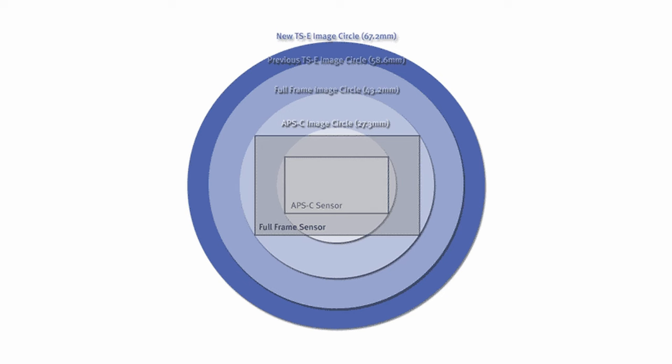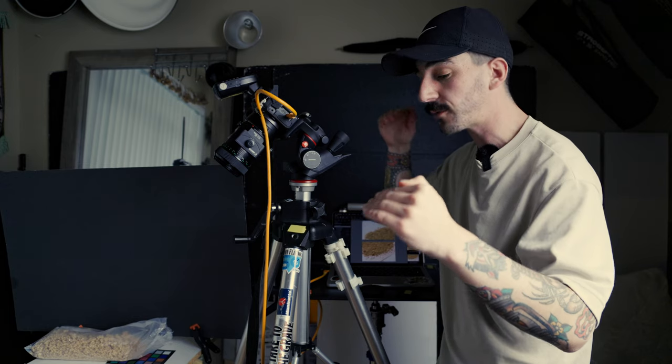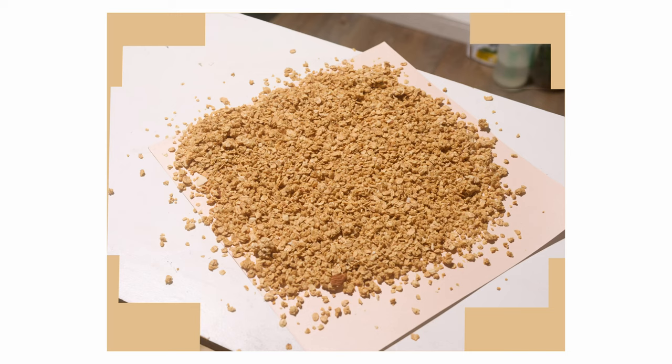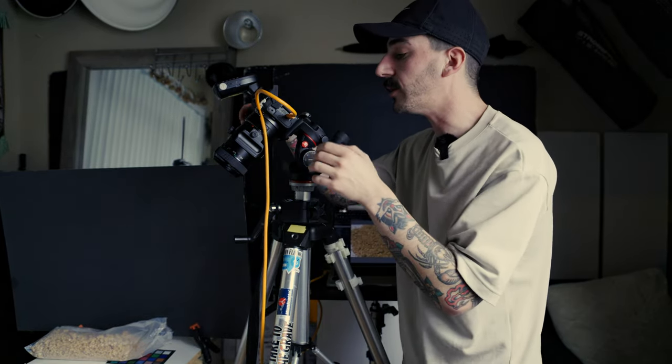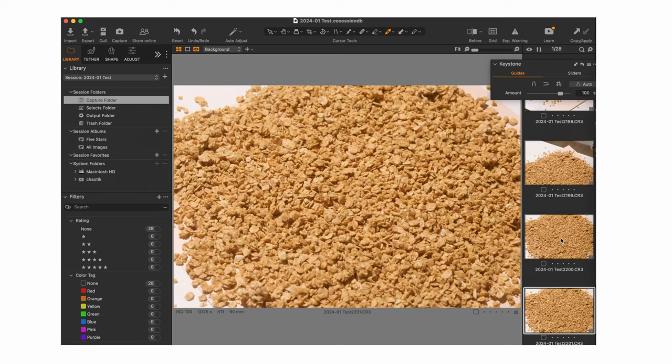One of the cool things we can do is shift the perspective of where the lens is looking from. Even though the sensor stays in place, because the image circle of the lens is bigger than the sensor, we can choose to look from different perspectives — for example, shooting a box to see the top and front at the same time without looking down at the product. In this case, we're going to create a panoramic by shooting as many images as needed to create a bigger field of view on a smaller sensor, giving us that medium format look. We'll start with a baseline shot right in the middle.